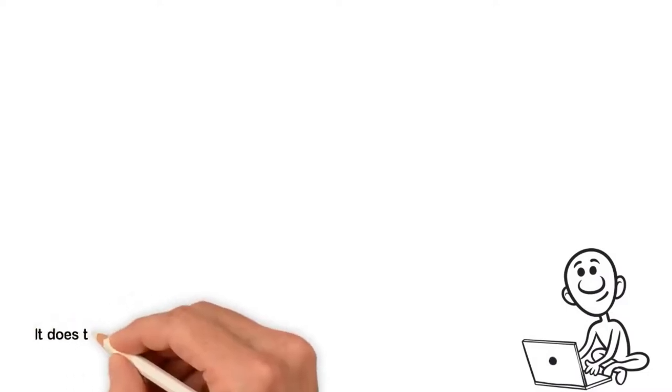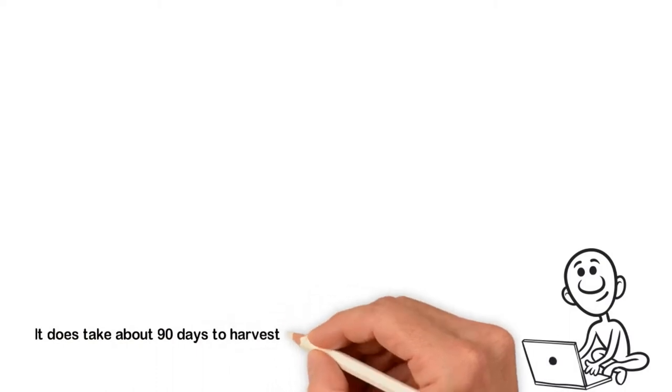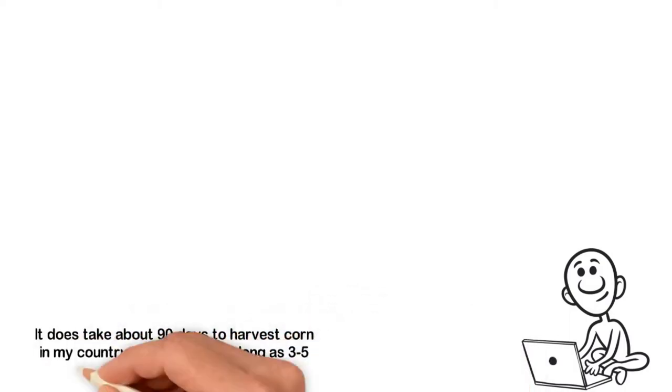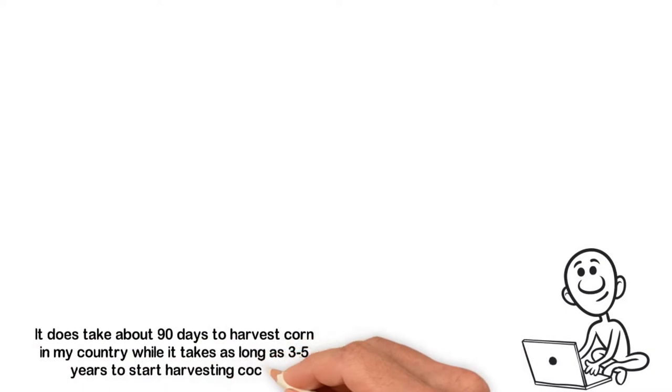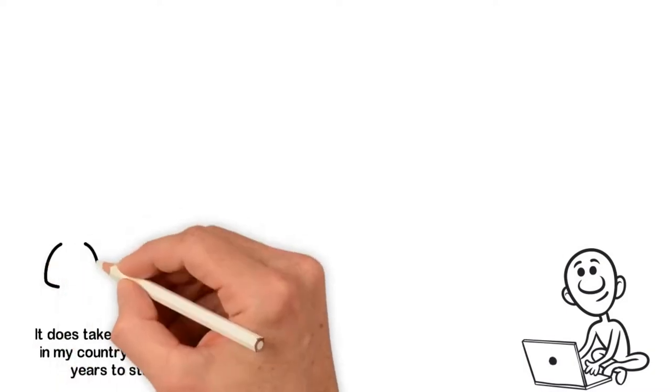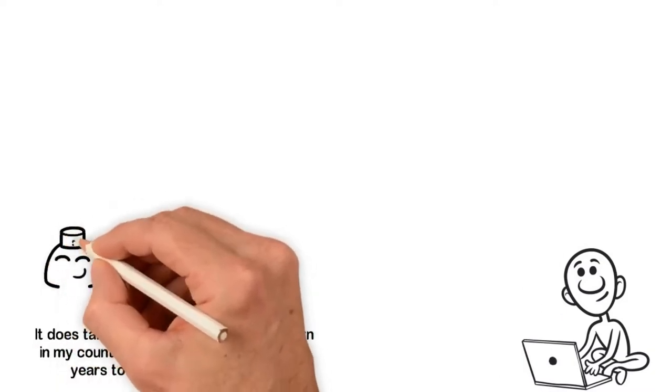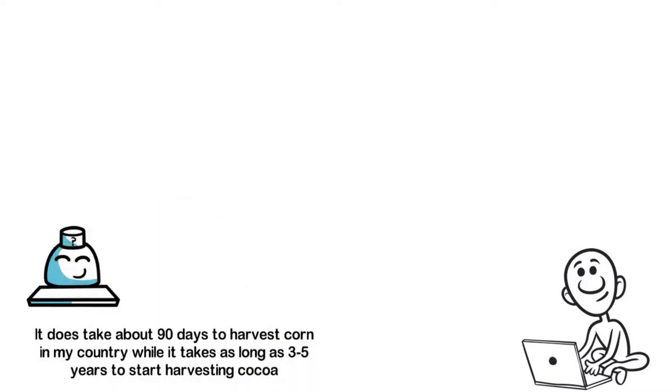You see, it does take about 90 days to harvest corn in my country, while it takes as long as 3-5 years to start harvesting cocoa. So, ordinarily, if I asked you which is easier to plant, corn or cocoa, the answer should be corn, right?